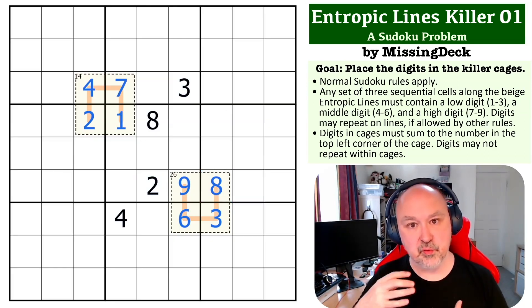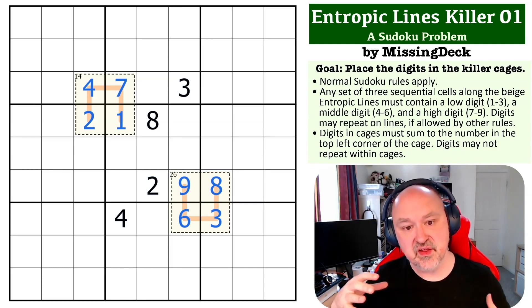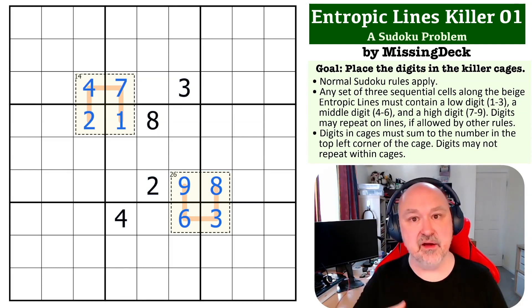It's all about the fact that within those entropic lines, you are forced either to have a low, a middle, or a high on the lines in those bands. Your options are much more limited by the fact that even though you're after a high total in this cage, you must use at least one low digit and you must use at least one medium digit. So all of your options are forced down.